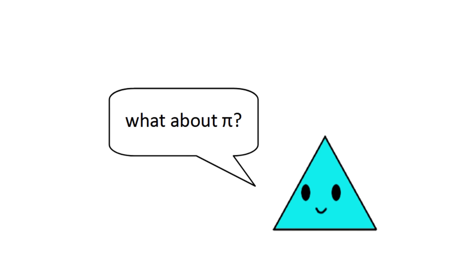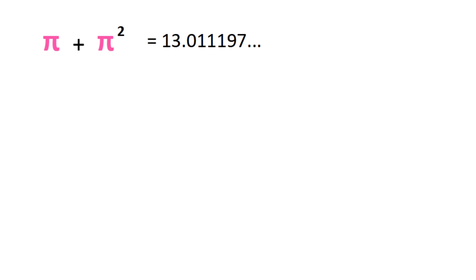What if pi is the base though? Well, these coincidences are less impressive, but they are still pretty cool. Pi plus pi squared is close to 13, but not that close. Going from first and second powers to third, pi cubed is 31.006.